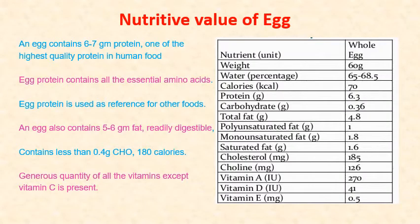The nutritive value of egg: an egg contains about 6 to 7 grams of protein, one of the highest quality proteins in human food. Egg protein contains all the essential amino acids, and that is why egg protein is used as the reference for other proteins for comparison. Egg also contains 5 to 6 grams of fat, which is readily digestible. Egg contains less than 0.4 grams of carbohydrate, hence it has low calories. It has a lot of vitamins in high quantity, except vitamin C.